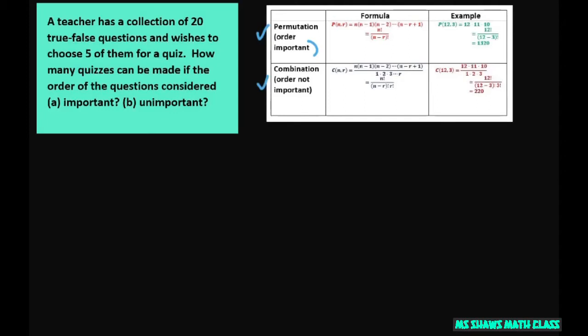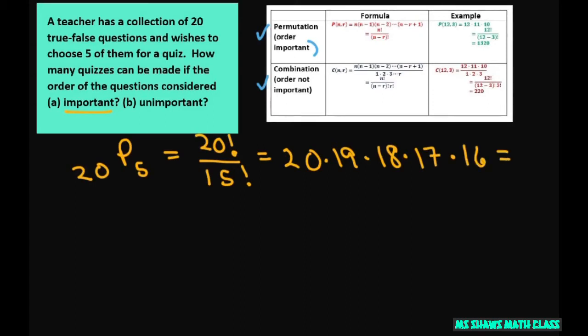So for order important we're going to use 20 as a total and choosing 5. Using your formula you're going to get 20 factorial divided by 15 factorial and that gives you 20 times 19 times 18 times 17 times 16 and that gives you 1,860,480.